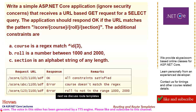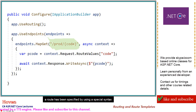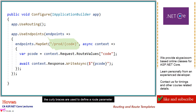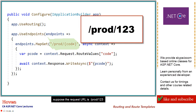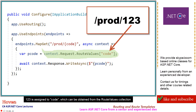Next, we discuss route templates. This is an example of a mapped GET request. A route has been specified by using a special syntax — this is called a route template. Notice the curly braces in the template; they are used to define a route parameter. For example, suppose the request URL is PROD/123. The routing middleware attempts to find the best match for a route template, and 123 is assigned to the code parameter, which can be obtained from the route values collection.